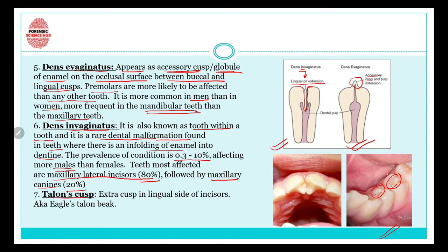Next comes talon's cusp, which is an example of dens evaginatus. However, this time it is not in premolars — it happens in incisors. There is an extra cusp on the lingual side of the incisors. The lingual side is the side your tongue normally touches. Talon's cusp is also known as eagle's cusp or eagle's talon beak.